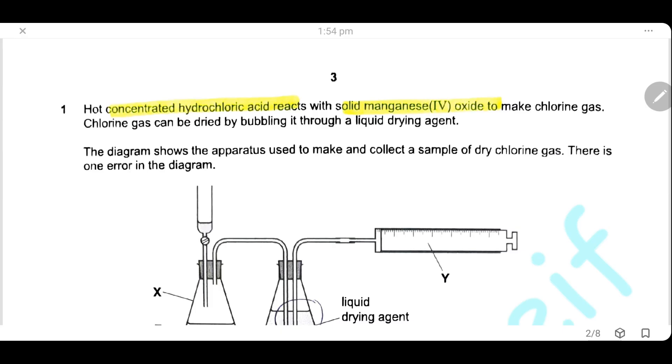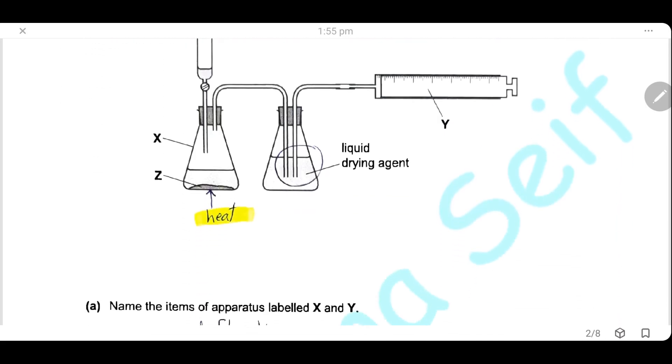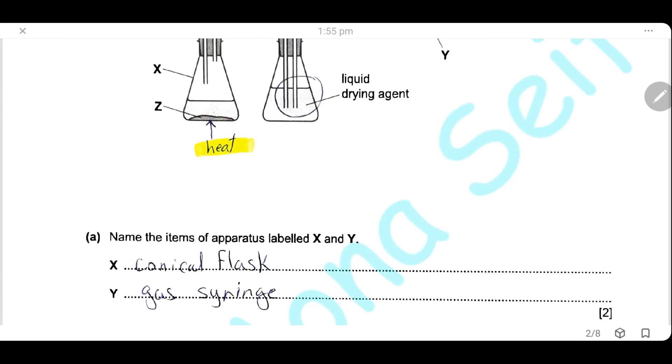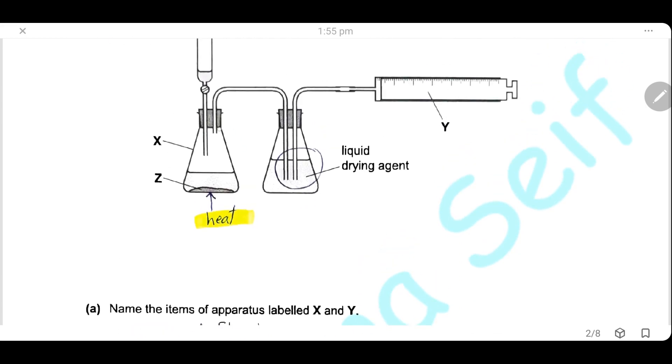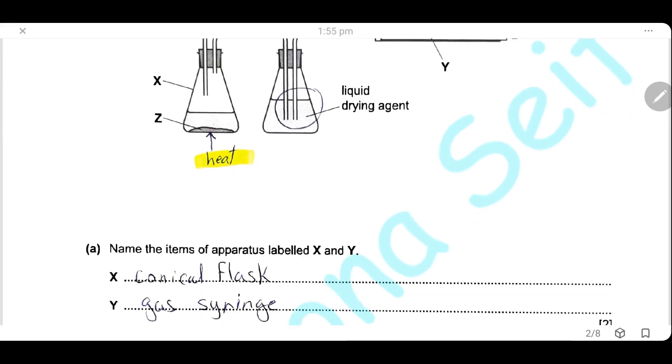Question 1. Hot concentrated hydrochloric acid reacts with solid manganese(IV) oxide to make chlorine gas. Chlorine gas can be dried by bubbling it through a liquid drying agent. The diagram shows the apparatus used to make and collect samples of dry chlorine gas. There is one error in this diagram. Name the items labeled X and Y. X is a conical flask and Y is a gas syringe where chlorine gas should be collected.